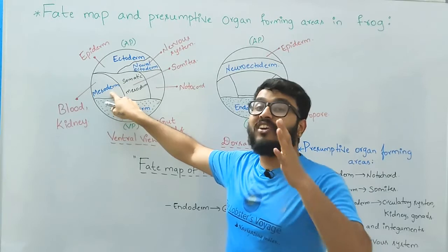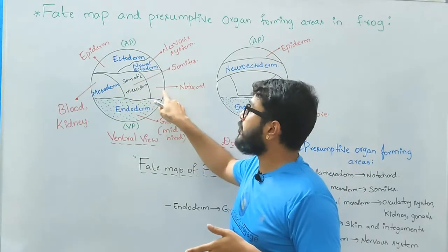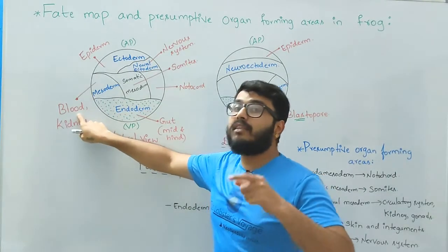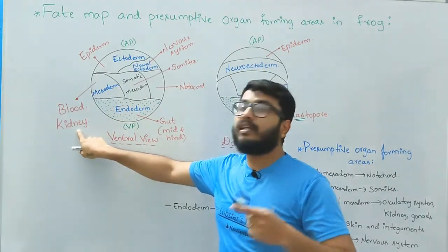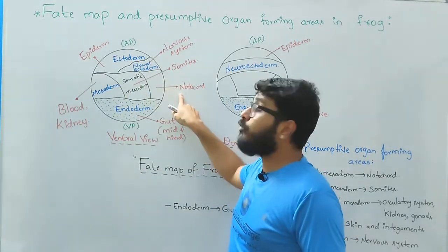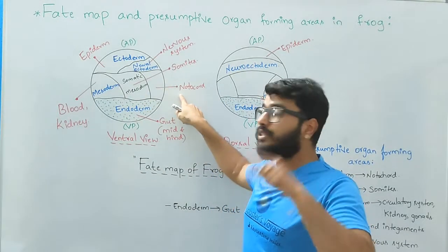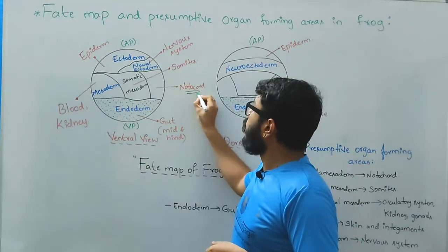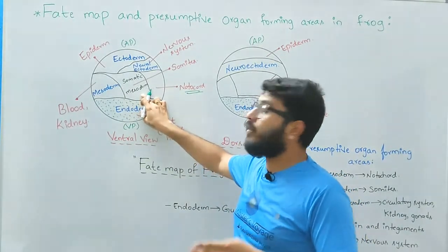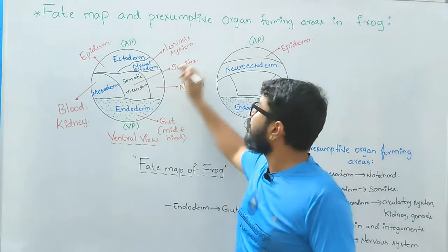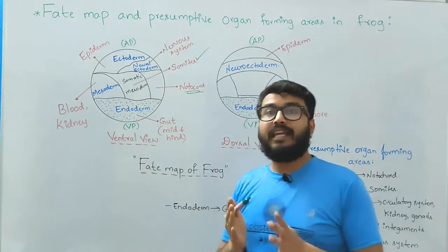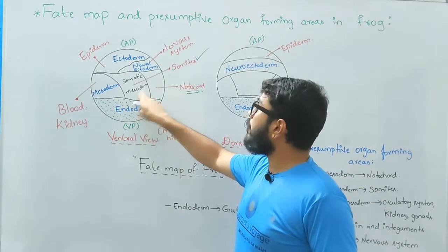Similarly, mesoderm is further differentiated into three sub-locations: one of which forms the blood and the circulatory system along with the kidney for the process of filtration of the blood; another part forms the major supporting system of the body, that is notochord; and the middle portion, which is darkly stained with Bismarck brown, forms the somites. This is the location that initiates the process of formation of somites.